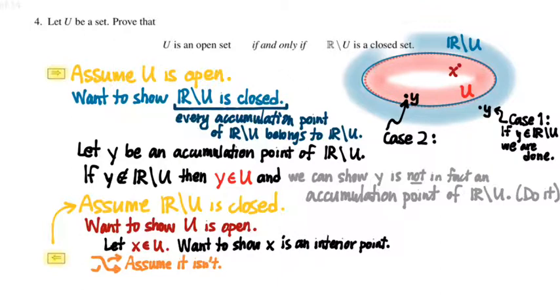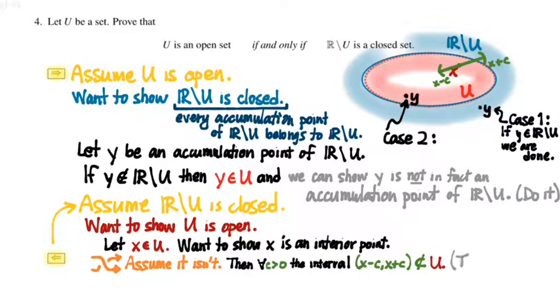Well, this is a little challenging to work with. If X is not an interior point, that means that any distance by which we stretch our arms out from X, so for all values of C, the interval from X minus C to X plus C, the open interval, is not a subset of U. And what that means is that it must contain some point which is outside of the set U.